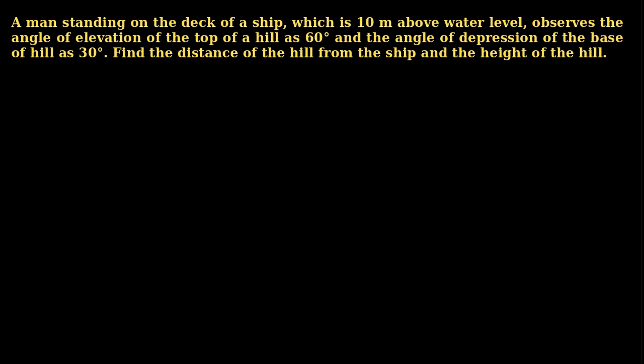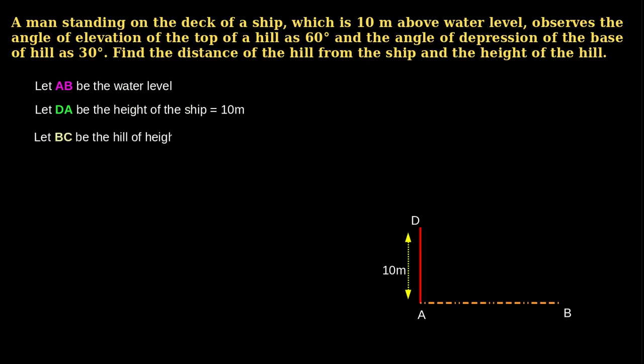Let us analyze the problem and see what is given and what needs to be calculated. Let AB be the water level and DA be the height of the ship, which is 10 meters. BC is the height of the hill from the water level. We have to find its height with the given data. Let H be the height of the hill.